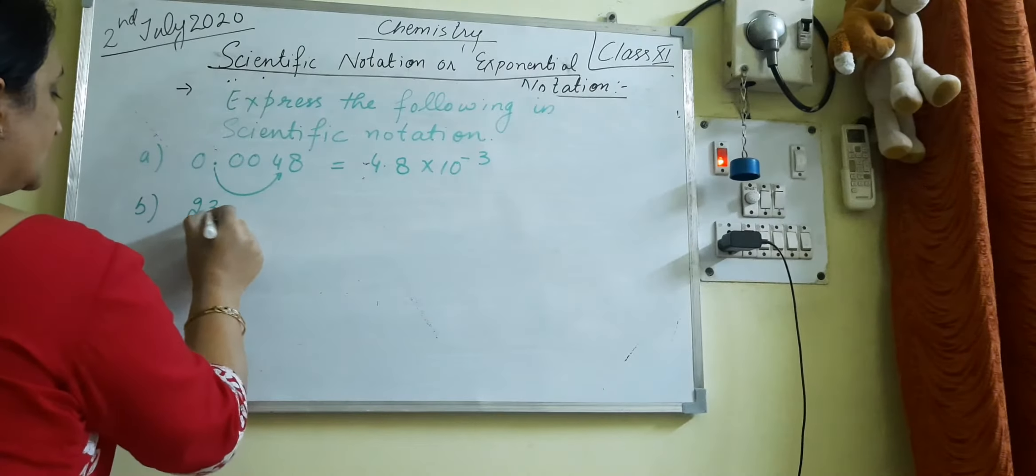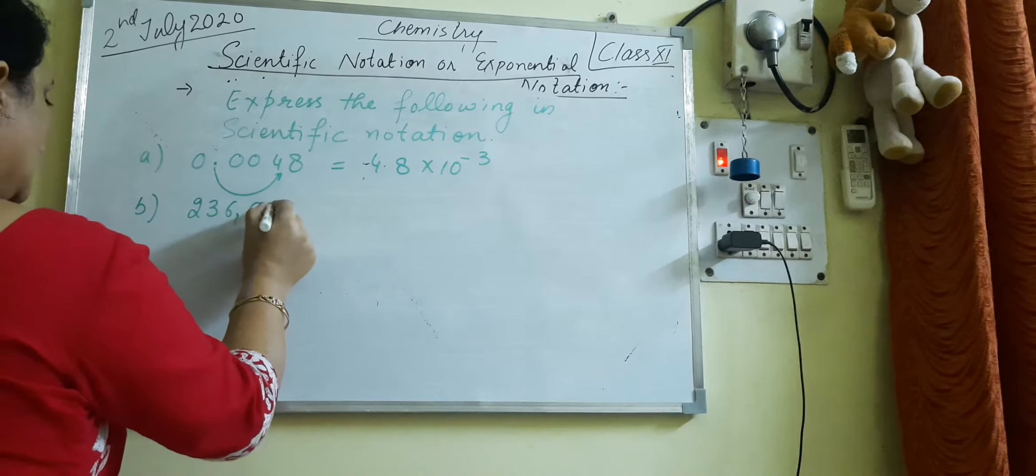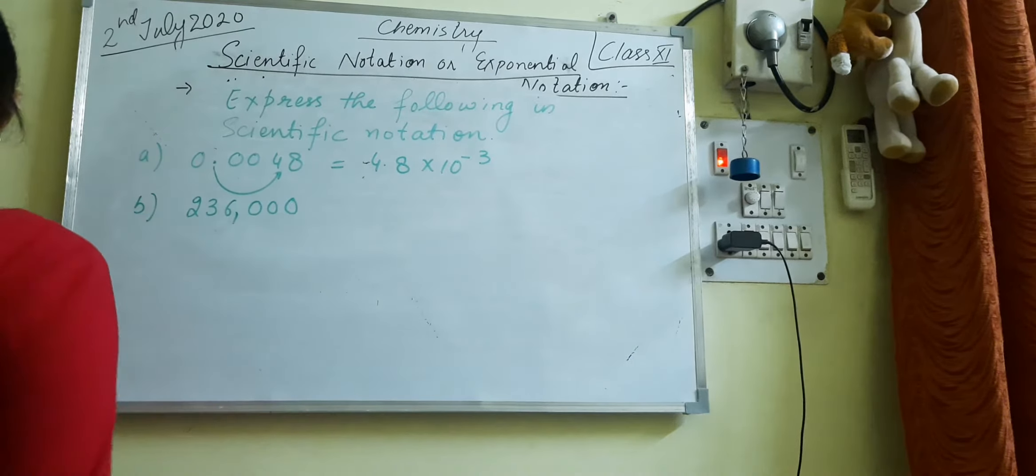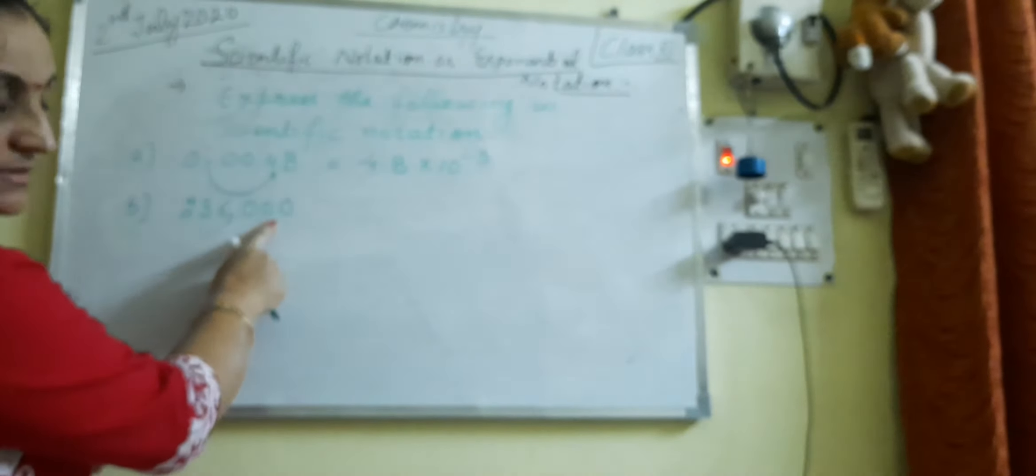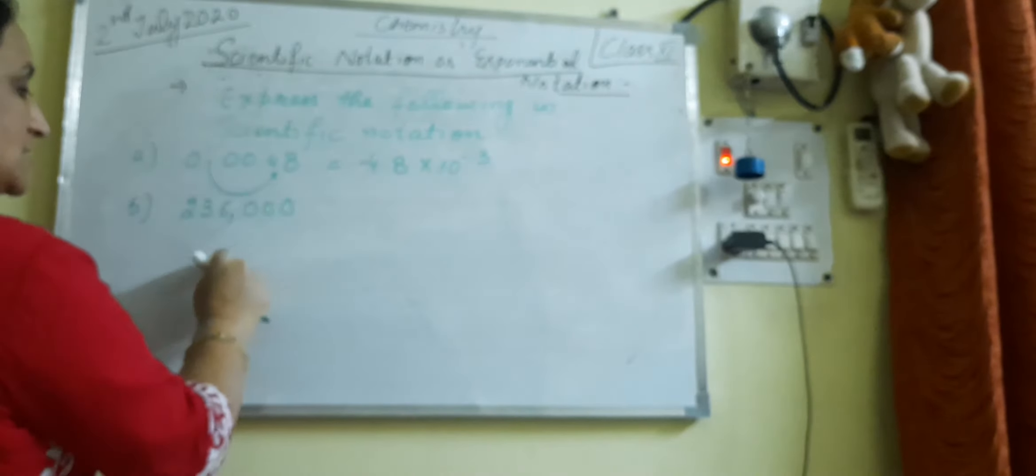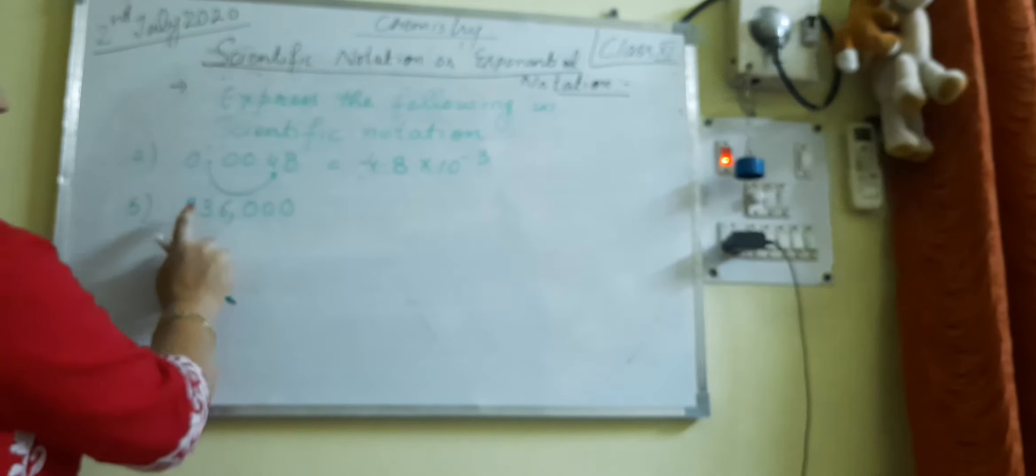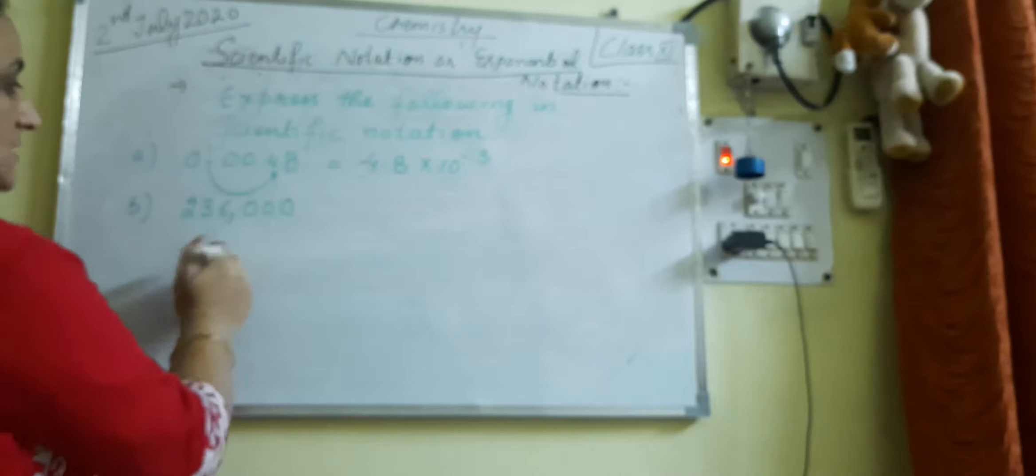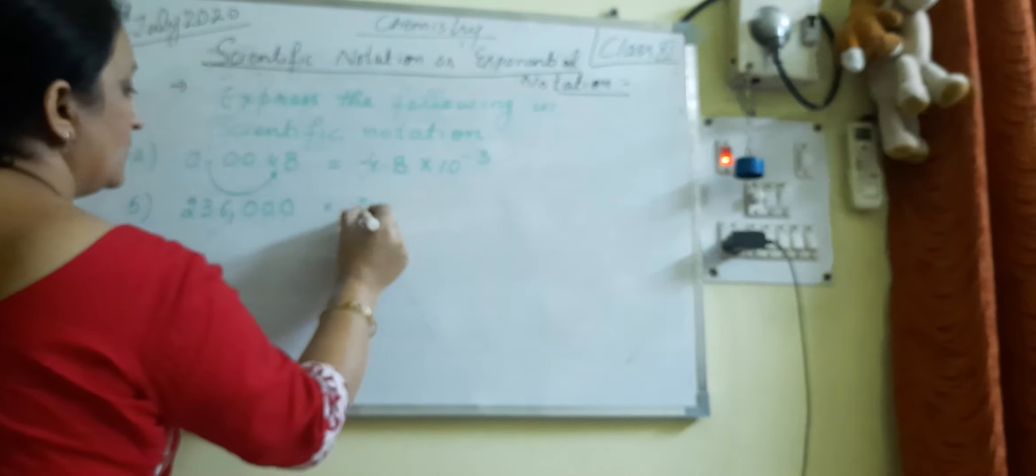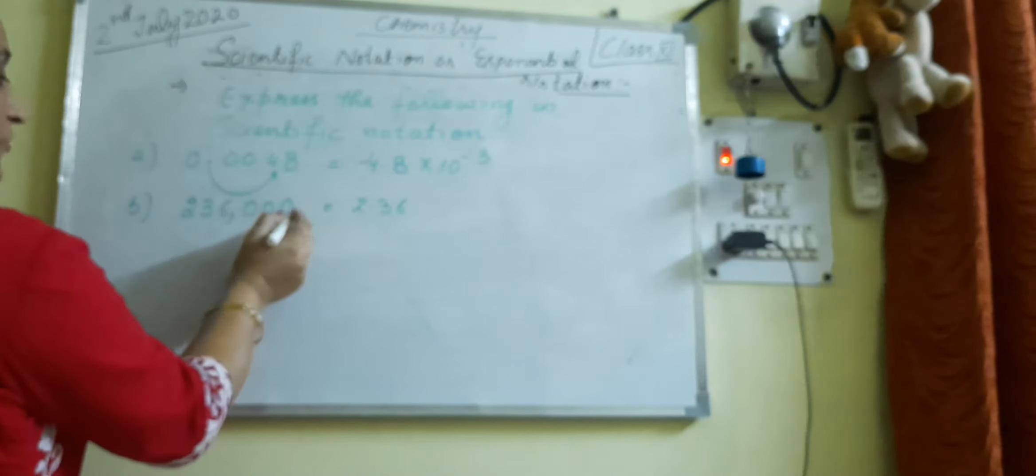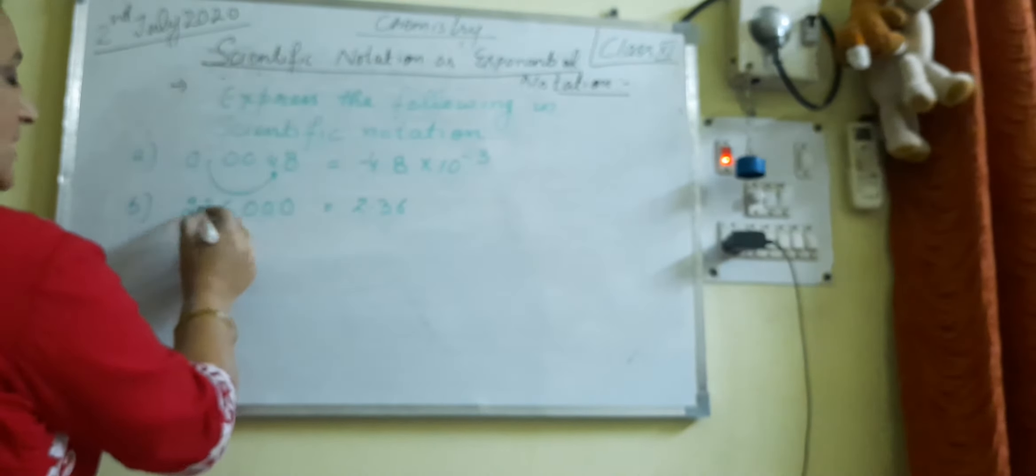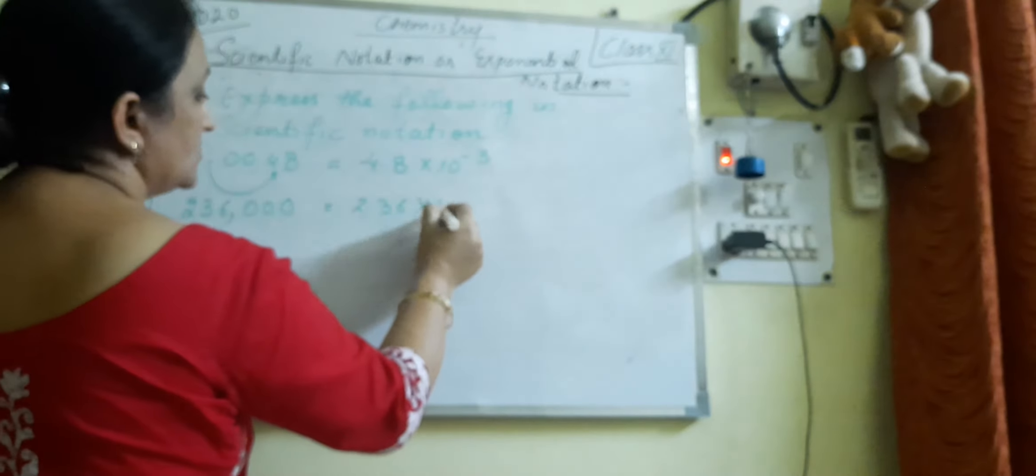Next question: 236000. Now here the decimal is not given. So you move the decimal on this side, where do we move the decimal? At this place. So it is written like 2.36. Now the decimal is moved 1, 2, 3, 4, 5 places toward the left side. So this becomes 2.36 into 10 raised to power 5.